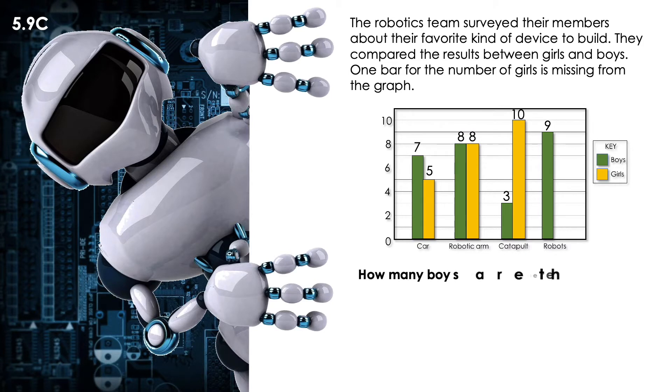Now, how many boys are there in total? To answer this question, I just have to count and add and combine the amount of boys that I have. So seven plus eight plus three plus nine equals how many boys? 27 boys.